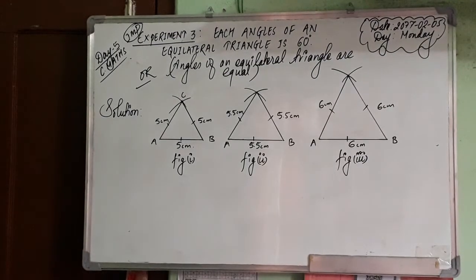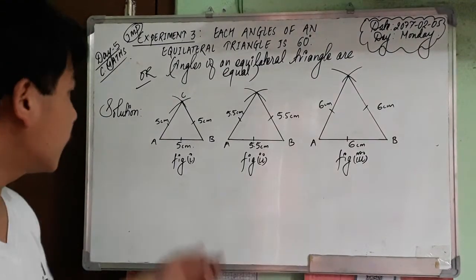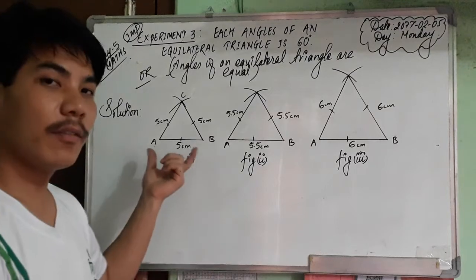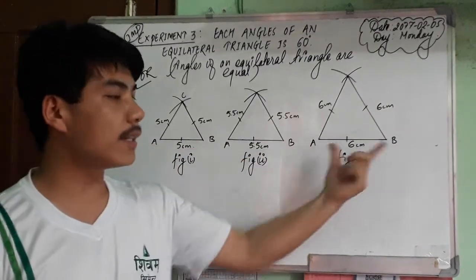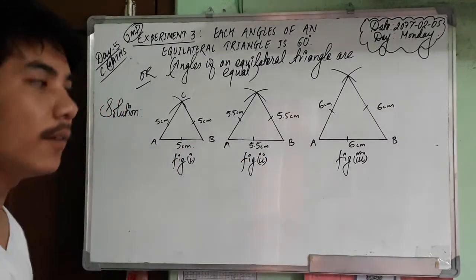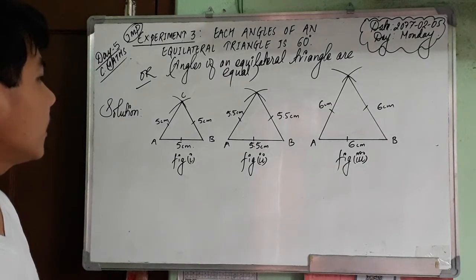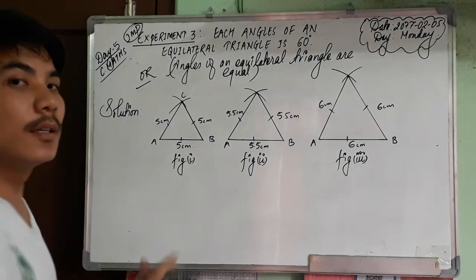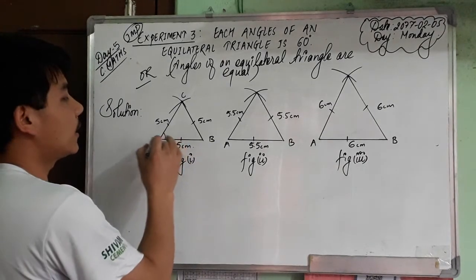Okay, I have made 3 equilateral triangles here, having sides of 5cm, 5.5cm, and 6cm each. Now measure the angles of each equilateral triangle.